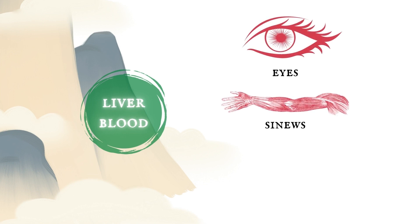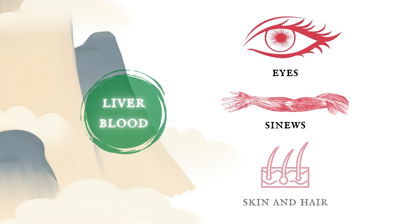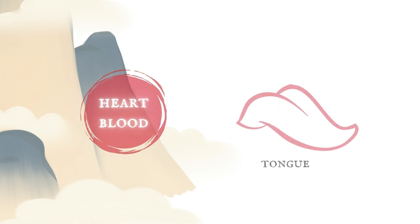For example, liver blood nourishes and moistens the eyes and sinews, so that the eyes can see properly and the sinews are supple and healthy. Liver blood also nourishes and moistens the skin and the hair, ensuring that the skin is not too dry and the hair remains shiny and healthy. Another example: heart blood nourishes and moistens the tongue, keeping it fresh and pink.